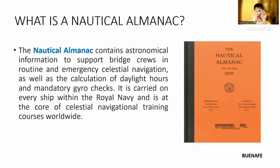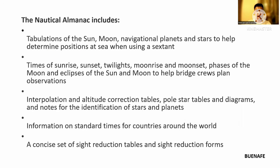The nautical almanac includes: first, the tabulation of the sun, moon, navigational planets, and stars to help determine position at sea when using a sextant. Second, times of sunrise, sunset, twilights, moonrise and moonset, phases of the moon, and eclipses of the sun and moon to help bridge crews plan observations.